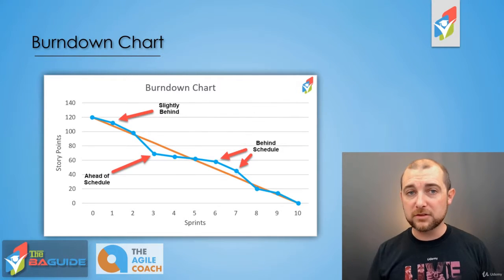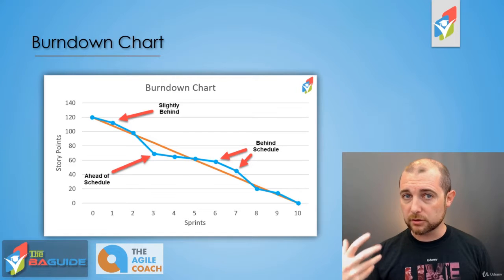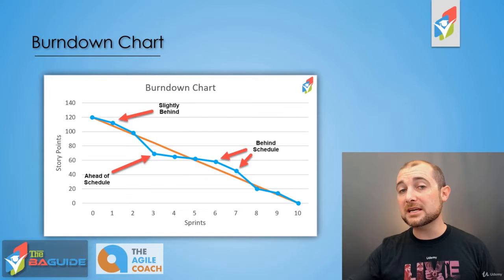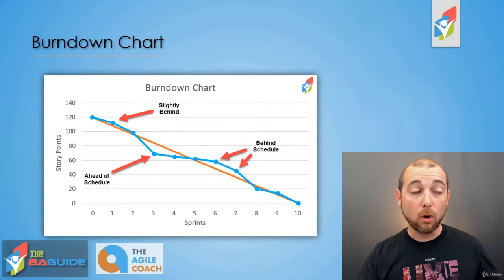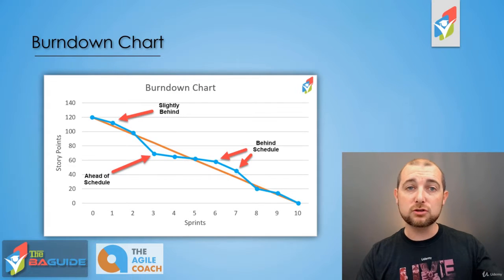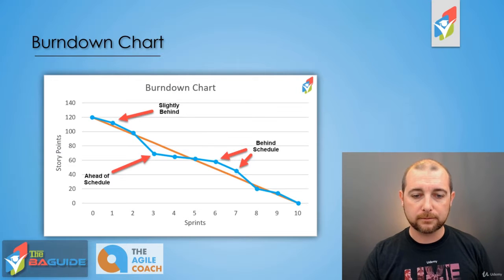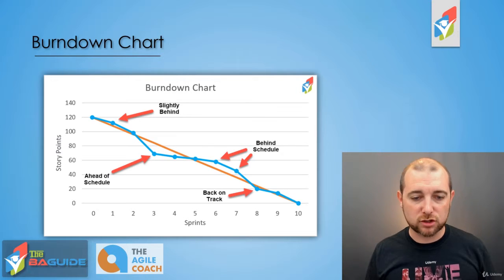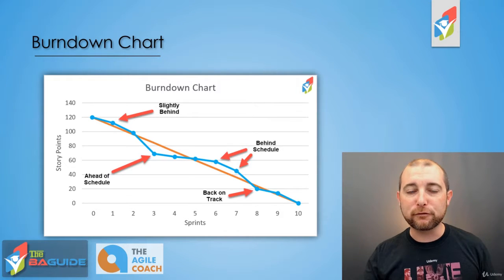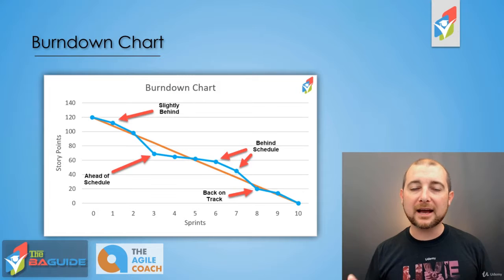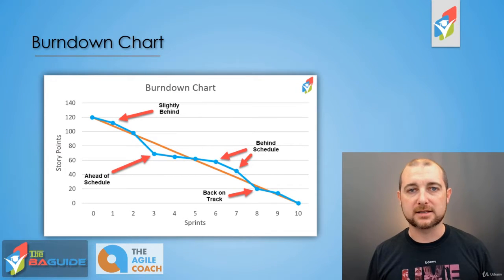As we look at sprints six and seven, we're now behind schedule and getting towards the end of the project. We've gone above the trend line, so we need to make some adjustments to complete the project in our 10-sprint timeline — or potentially add sprints if needed. In sprint eight, we get back on track, completing our story points and getting ahead of the trend line heading into the final two sprints, where we're able to stay on target and complete the project on time.